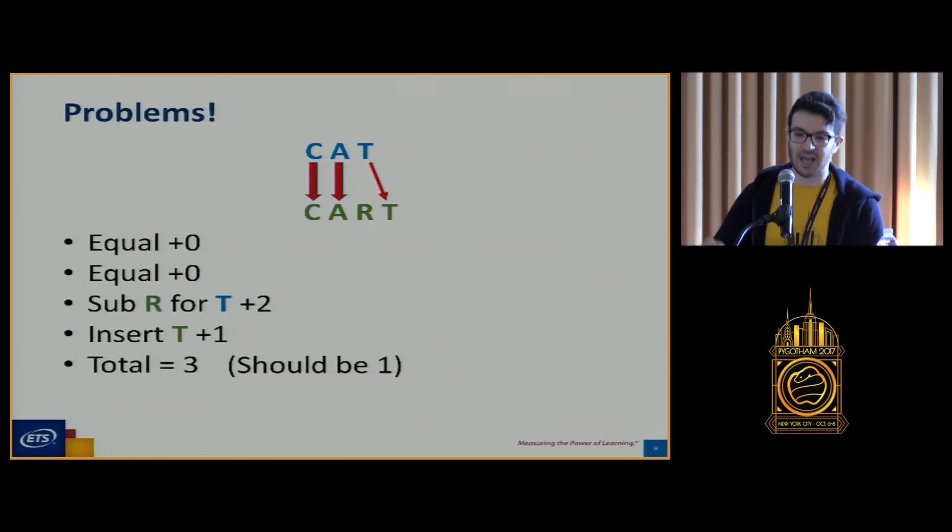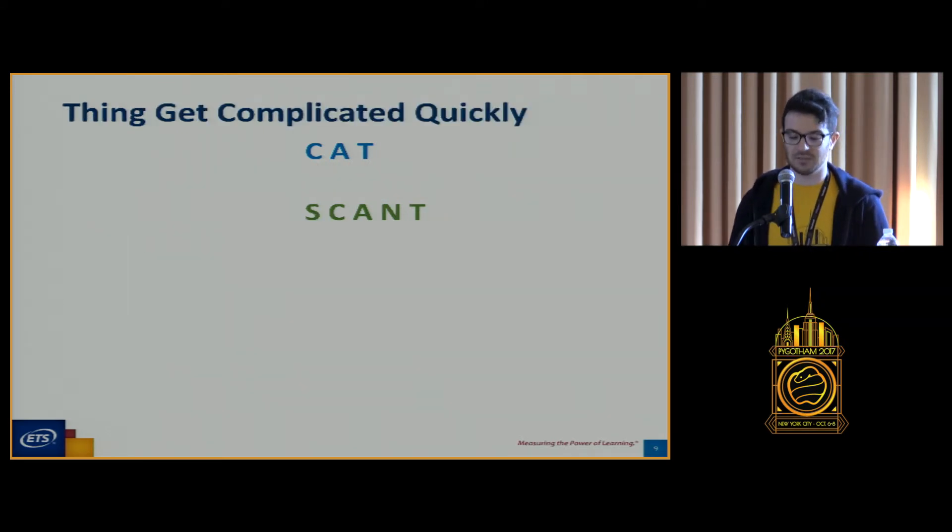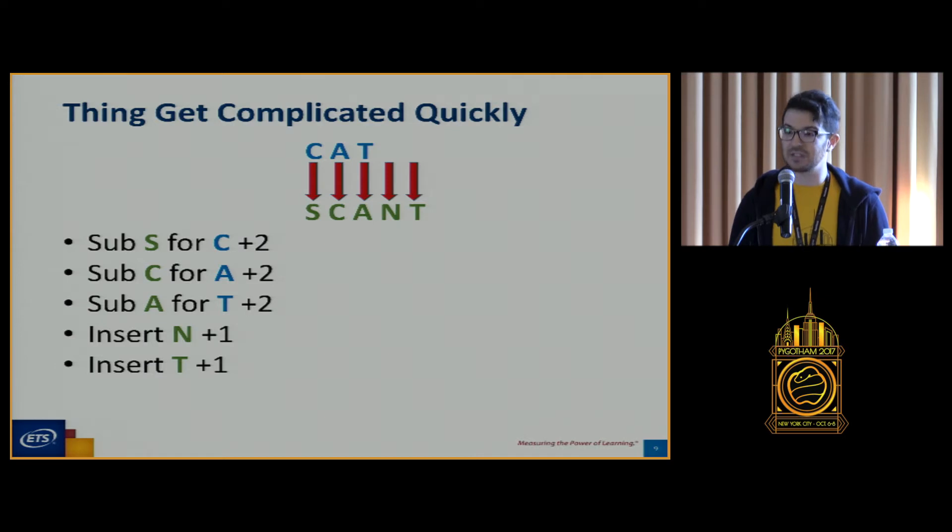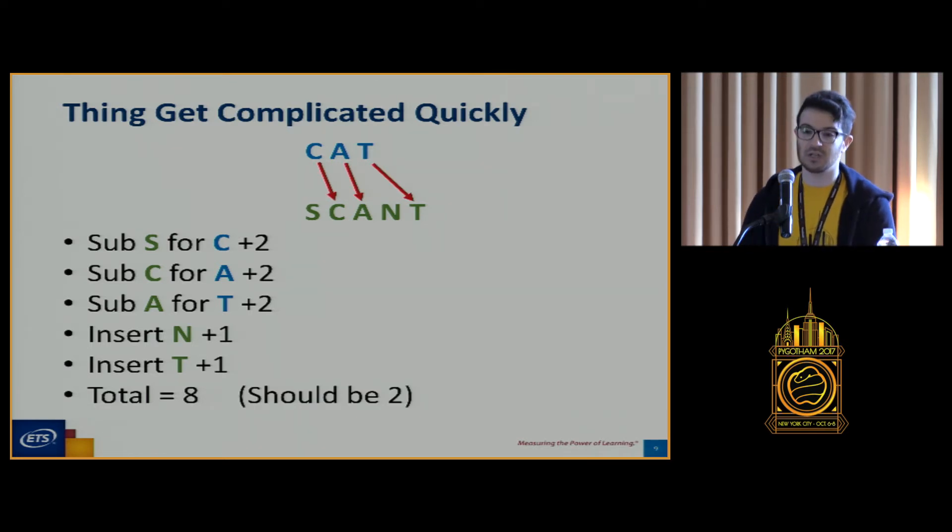So this we might say, well, we can look ahead a character or two. But things can get complicated very quickly with something like the word cat to the word scant. So here we would say two for that substitution, two for that substitution, two more. We need to insert an N and insert a T, giving us a grand total of eight. This is way more expensive than it should actually be. This should actually be a total cost of two. So unless we have some kind of look ahead, look back, we have to change everything, we would not figure out that really we only need to insert an S and insert an N, and we have the word scant. A much lower cost, so we would mis-evaluate the difference between these two words.